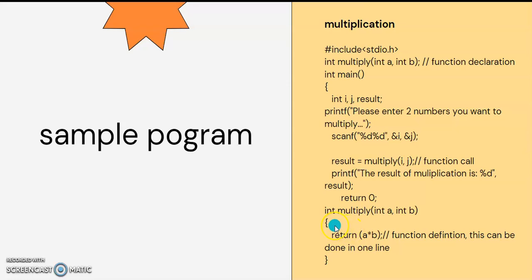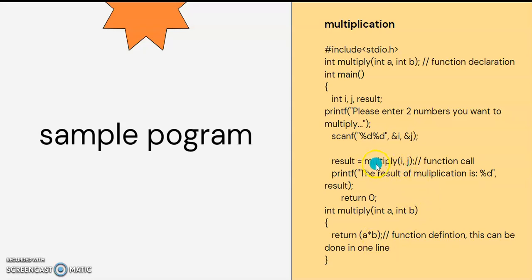The function body contains the declaration between opening and closing braces. We will execute the task. The multiply function is defined as: int multiply with parameters a and b, opening brace, then the return statement: return a * b.